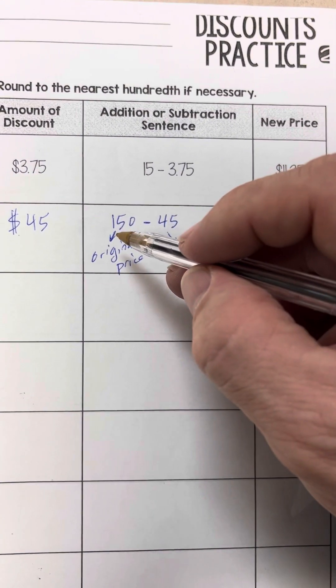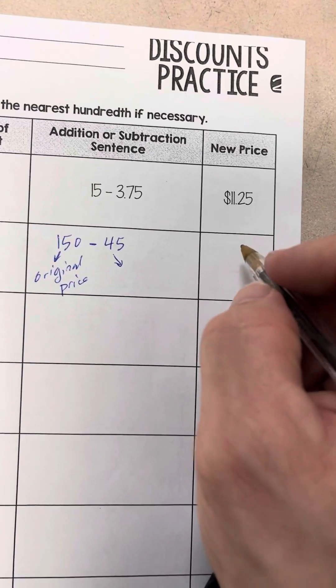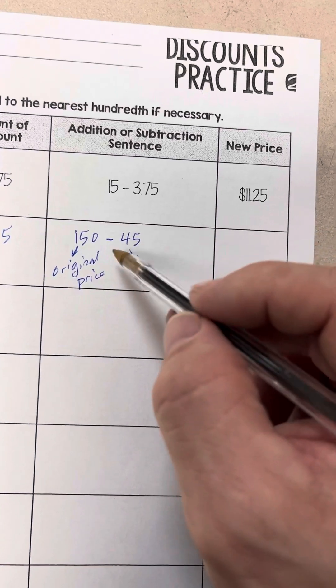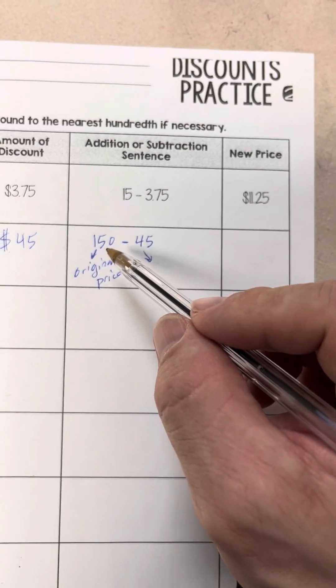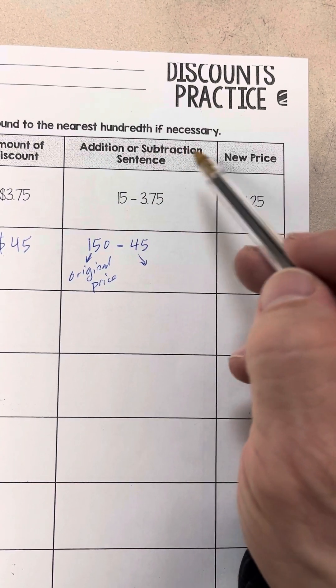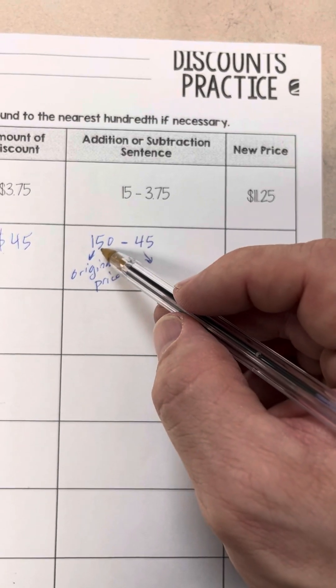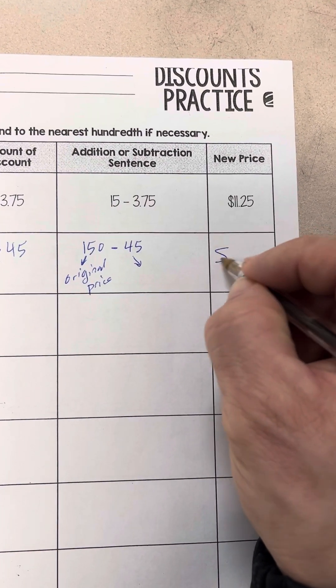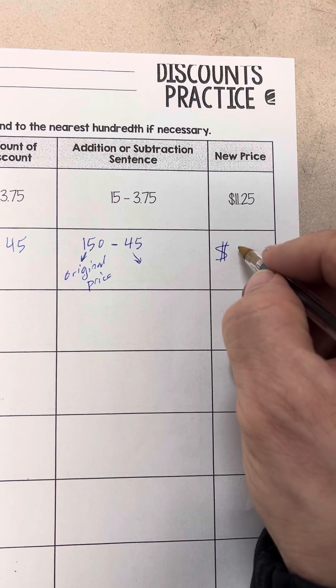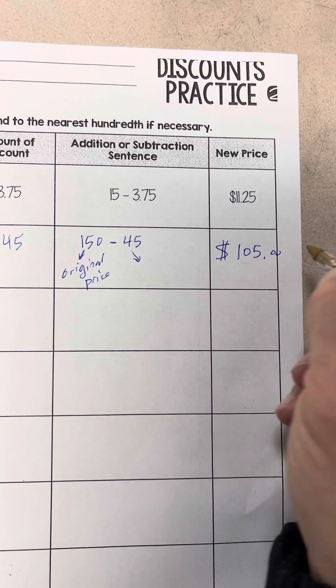So $150, discount $45 means we're going to pay – and this is the additional step here. It's actually two additional steps. They want you to write the subtraction sentence, and on these, you're always going to subtract because we're talking about discounts. So $150 original price minus the dollar amount is going to give you your final price here, your new price, which is $105.